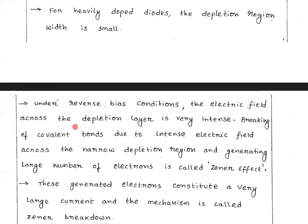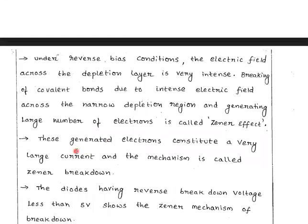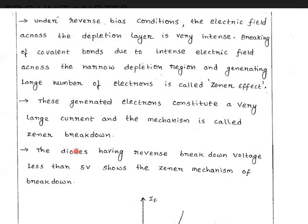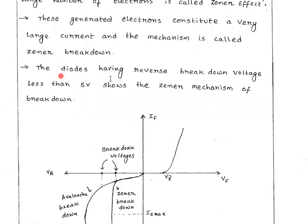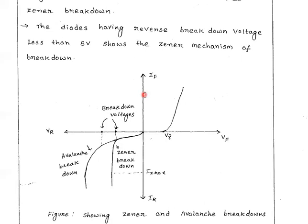Under reverse bias condition, the electric field across the depletion layer is very intense. Breaking of covalent bonds due to the intense electric field across the narrow depletion region generates a large number of electrons. This is called the Zener effect. These generated electrons constitute a very large current, and the mechanism is called Zener breakdown. Diodes with reverse breakdown voltage less than 5 volts show the Zener mechanism of breakdown.